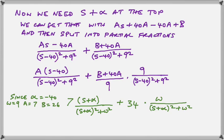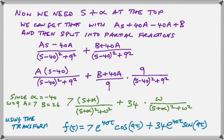So finally, we can see that because our A is 7, we have 7 times that expression, and then when we work out B plus 40A over 9, that comes out to 34 using those values for A and B. So we have 34 times the second expression, and then when we go back and use the transform.